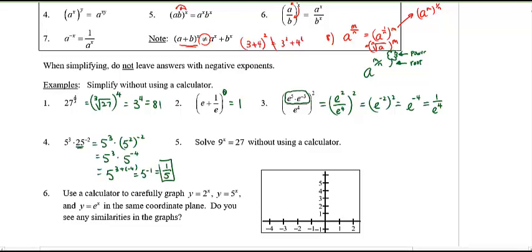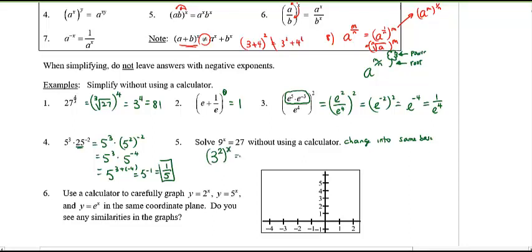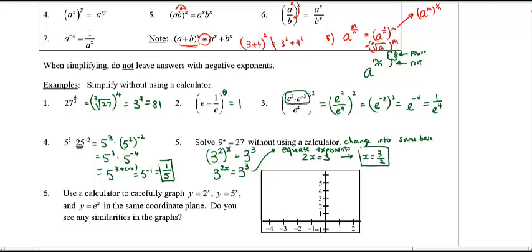Example 5: how do I solve this without a calculator? Change both sides to the same base. In this case, 9 and 27 can both be expressed as powers of 3: 9 is 3 squared and 27 is 3 cubed. This simplifies to 3 to the power of 2x equals 3 to the power of 3. Since the bases are the same, we equate the exponents: 2x equals 3, so x equals 3/2.